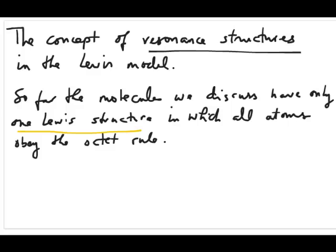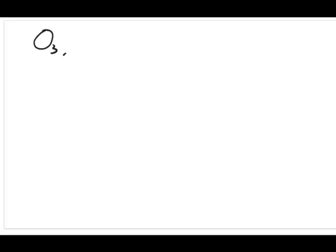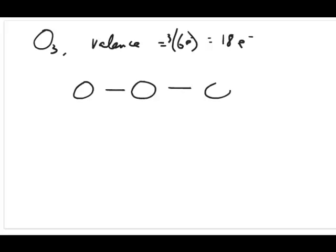We'll start by presenting an example of this type of molecule, and that example will be ozone, which is the molecule O3. If you want to draw the Lewis structure of ozone, the number of valence electrons would be 6 for each oxygen, and since there are 3 oxygens, we're going to have 18 electrons. Since we only have oxygen, our skeletal structure would look something like this, and now it's a matter of putting all the electrons around the oxygen atoms.